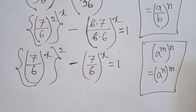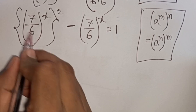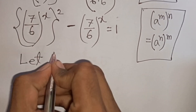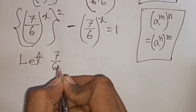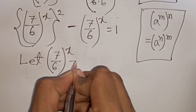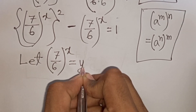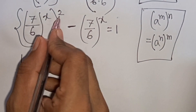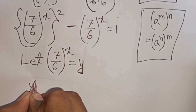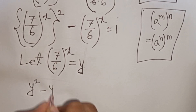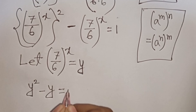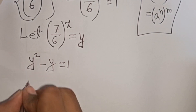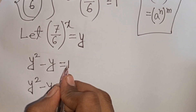We see that (7/6)^x appears in both terms. So let y = (7/6)^x. Our equation becomes y² minus y equals 1.